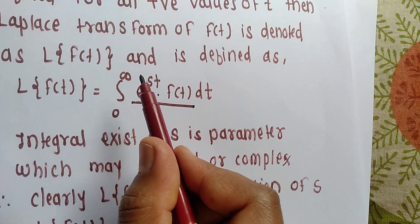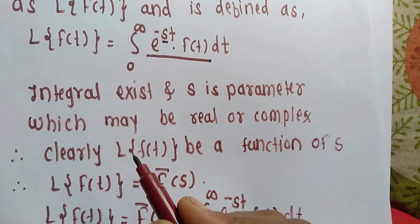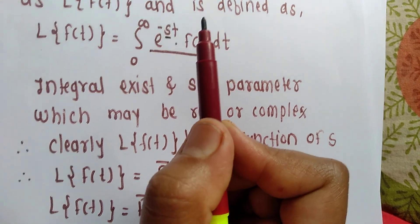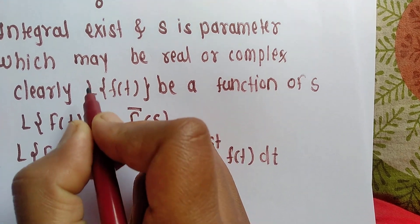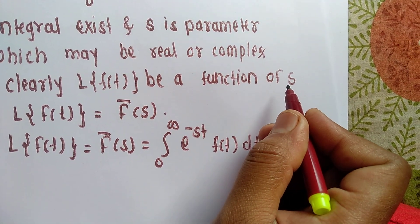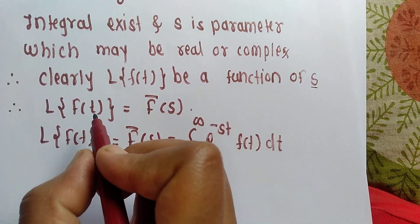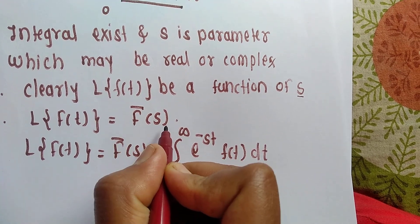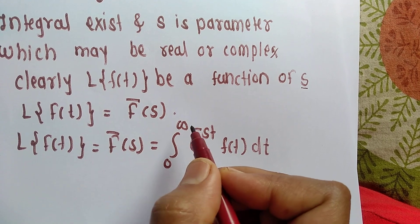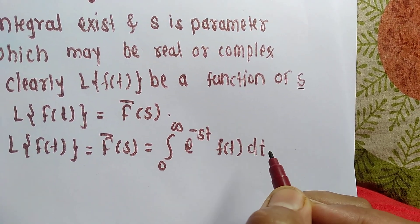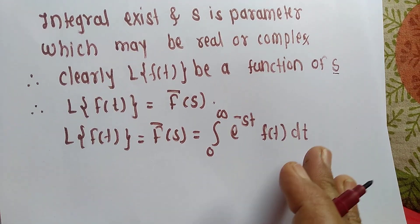With limit zero to infinity. After that, s is defined here as a parameter, and its value may be real or may be a complex number. When I solve the Laplace of a function, the answer will come in terms of s — that parameter s. So whatever the answer is, it will be in terms of s. I suppose that the answer obtained is in terms of s.